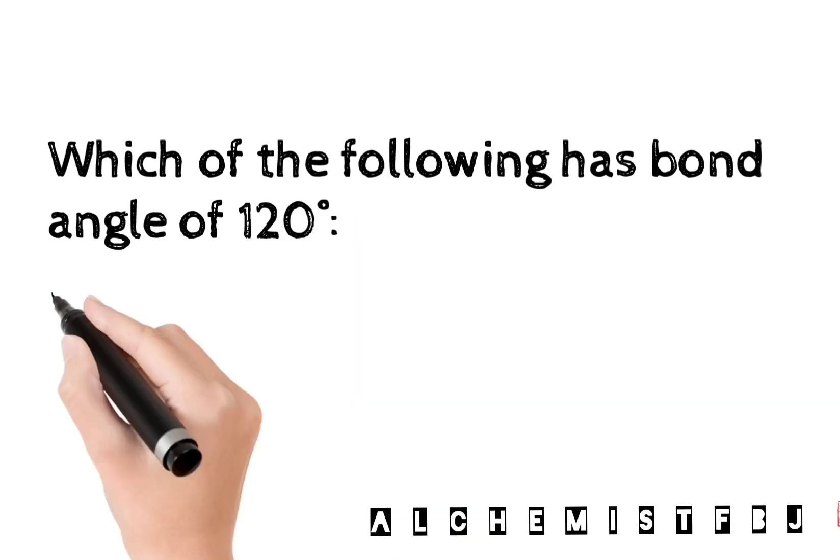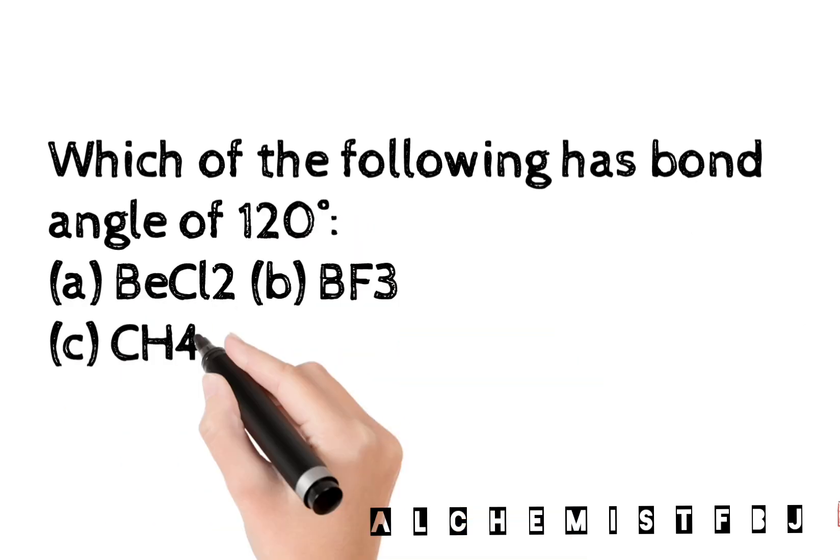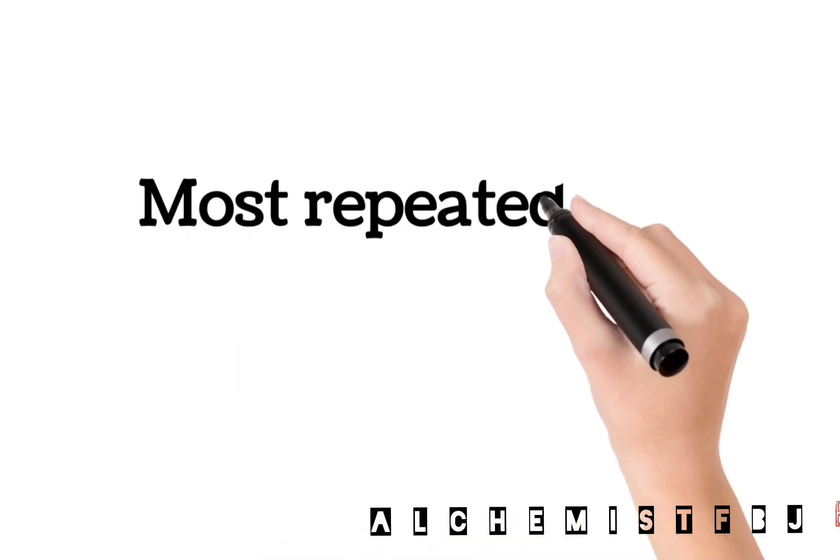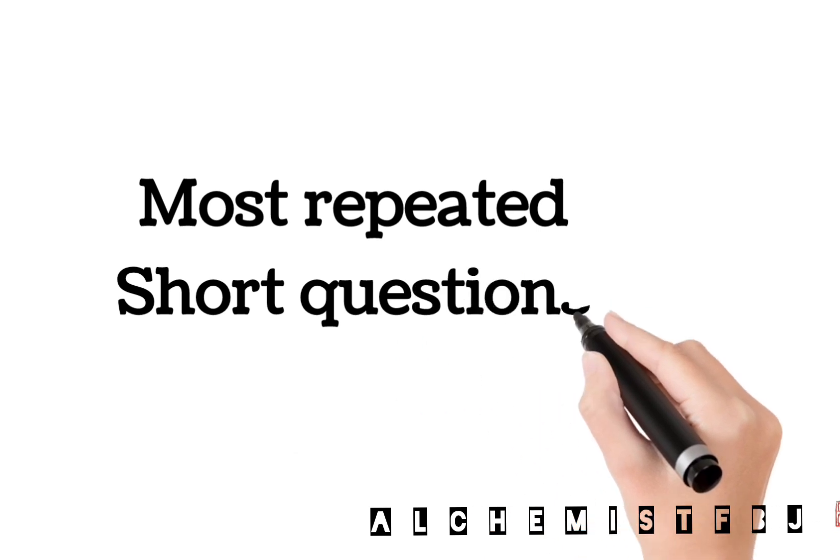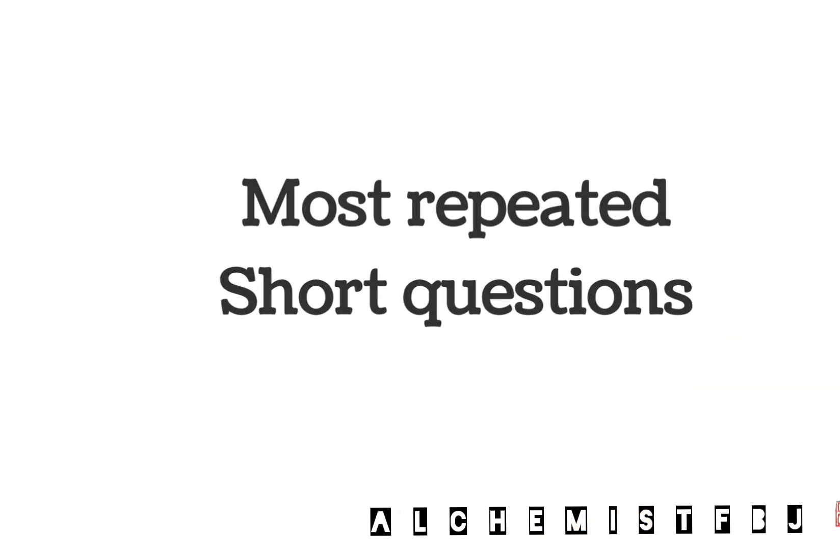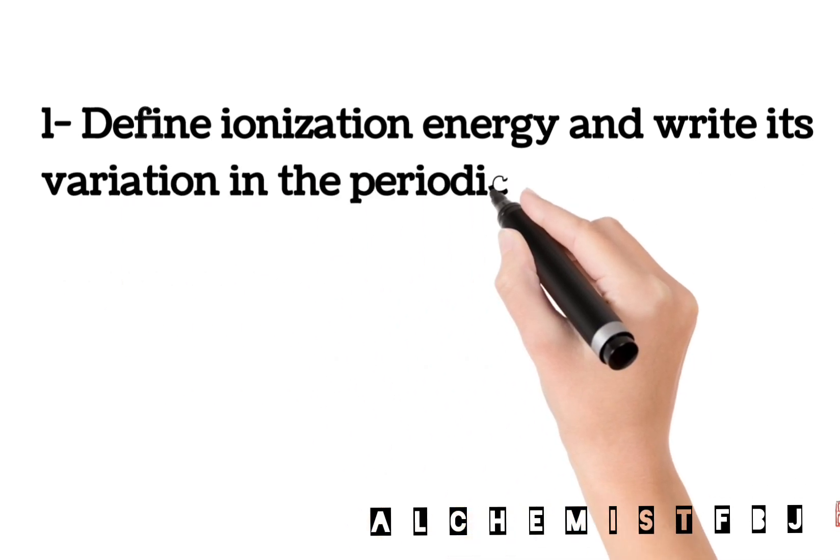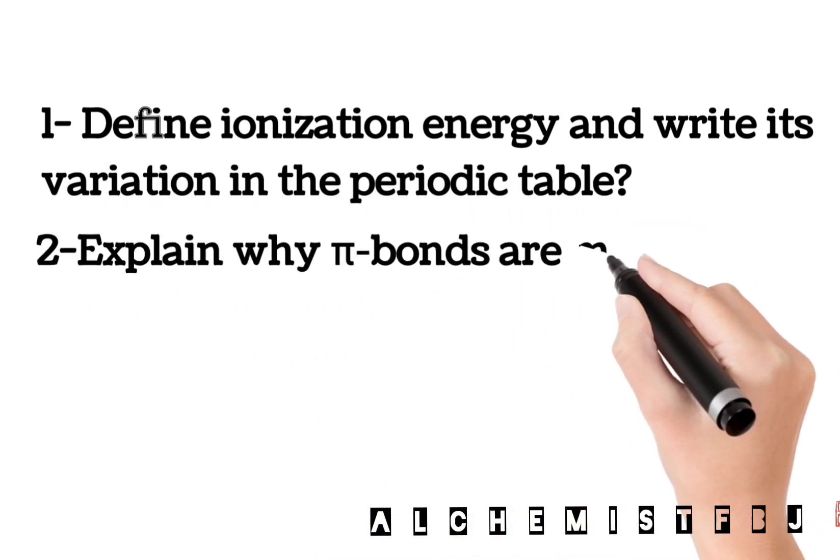Next, most repeated short questions. First one: Define ionization energy and write its variation in the periodic table. Explain why pi bonds are more diffused than sigma bonds, or why pi bond is bigger than sigma bond.